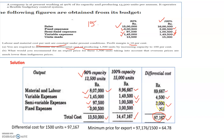Answer to Question 1: the differential cost of producing 1,500 units is 97,167. This is the cost of 13,500 units versus the cost of 15,000 units — taking the difference gives the cost of producing the additional 1,500 units, which is 97,167.